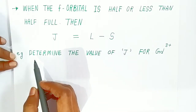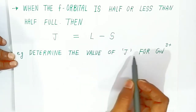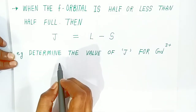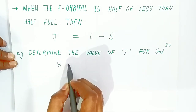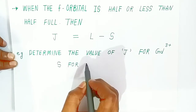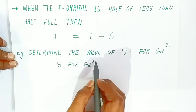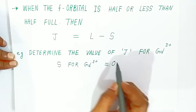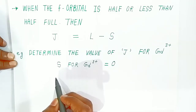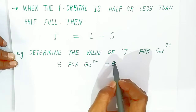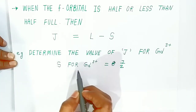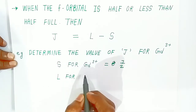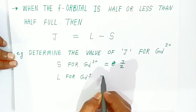For example, let's determine the value of j for gadolinium 3+. For gadolinium 3+, the S value is 7/2 and the L value — the orbital magnetic moment of gadolinium 3+ — is 0. These values were explained in the previous video.